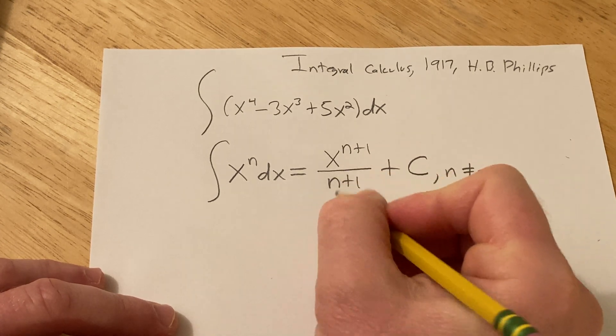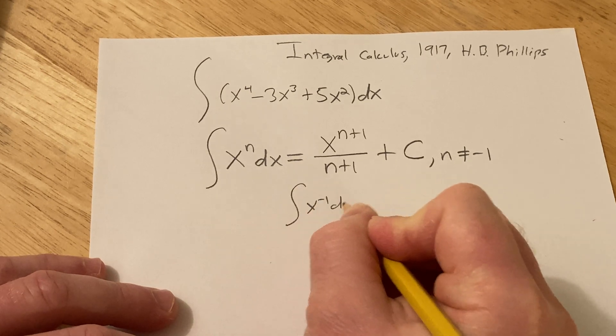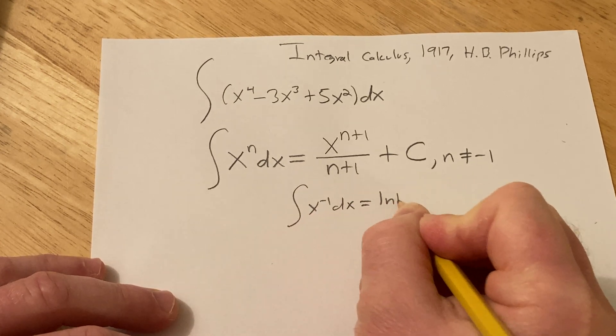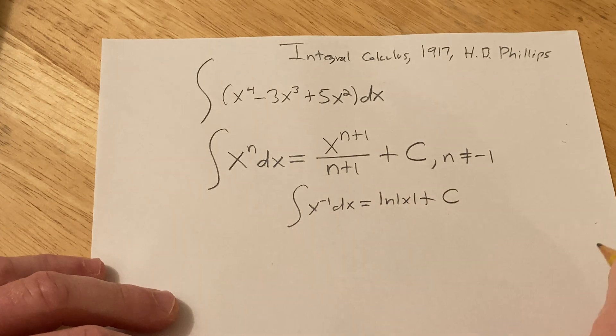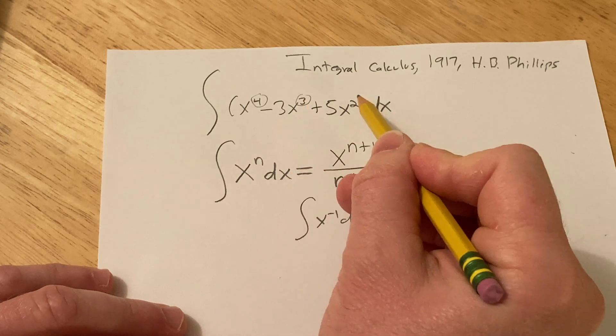It's missing the fact that n cannot be equal to negative 1. If n were negative 1, you would divide by 0. If you're curious, when n is negative 1, there's a different formula, and it is this one. However, in our specific example, all of the n's are okay. None of them are negative 1. You have 4, 3, and 2.